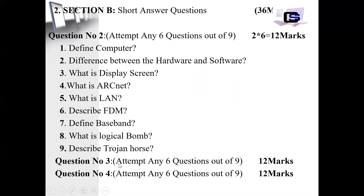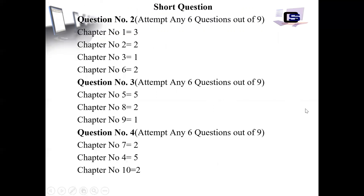You can see Question Number 3 and Question Number 4 in Section B. Question Number 4 also has 9 questions with a total of 36 marks. Question 2 comes from chapters 1 to 2, chapter 3 comes from chapters 3 and 6. There are more questions from chapters 5, 8, and 9. For Question Number 4, there are 2 questions from chapter 7, 2 from chapter 4, and 2 from chapter 10. You have 6 attempts and the total is 6 multiplied by 2 equals 12. This completes Section B.